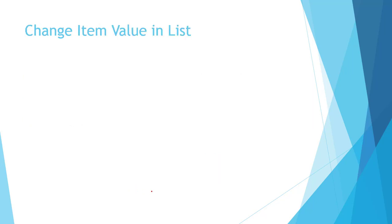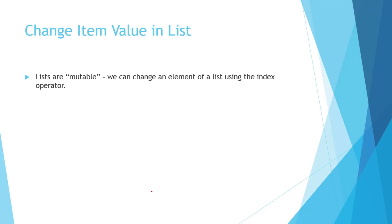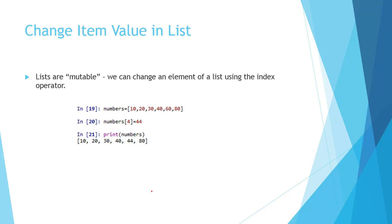Next, we will see how to change the item value in a list. Lists are mutable — we can change the element of a list using an index operator. Consider the number list containing 10, 20, 30, 40, 60, and 80. If we want to change the fifth element (index 4), which is 60, we write numbers[4] = 44. So 60 is replaced with 44.